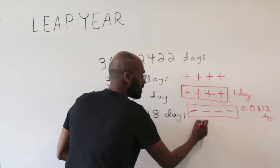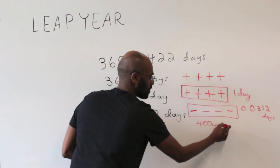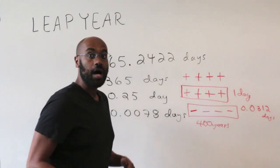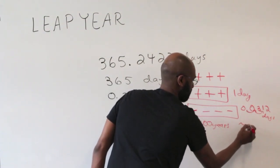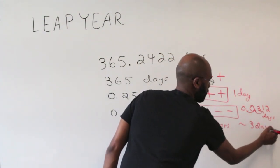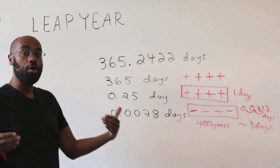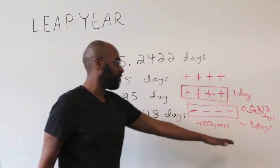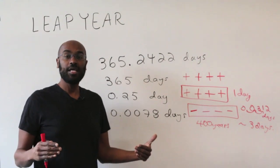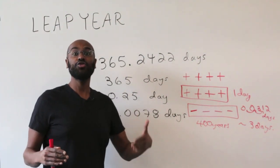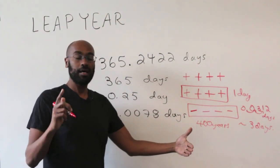So if you look over the horizon of 400 years, we lose 100 times this, which is roughly three days. So over the span of 400 years, we need to account for the fact that we actually lose three days. And the way that this is done is by declaring that every 100 years is not a leap year.